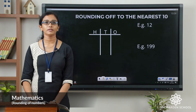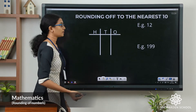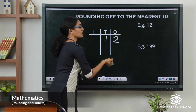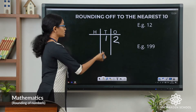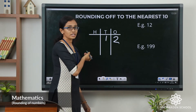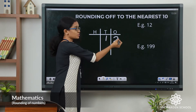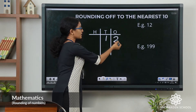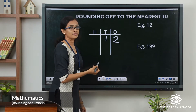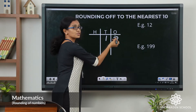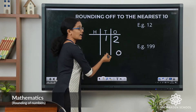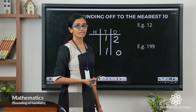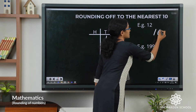Let us see that with an example. Here the first number is 12. Let us round off 12 to the nearest 10. So here the rounding digit is 10, so we have to check the digit in the ones place. The digit here is 2, which is less than 5. So let us change 2 to 0 and keep the other digit the same. So 12 rounded off to the nearest 10 equals 10.